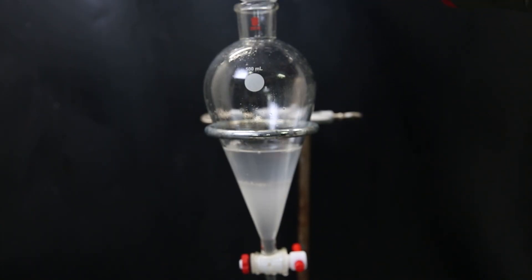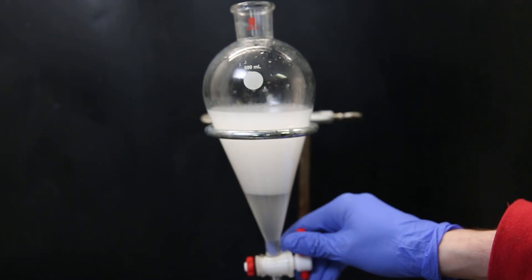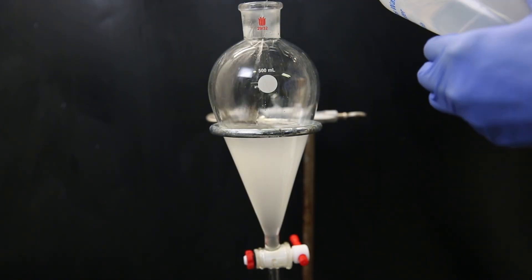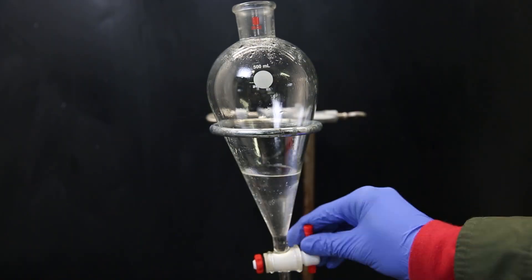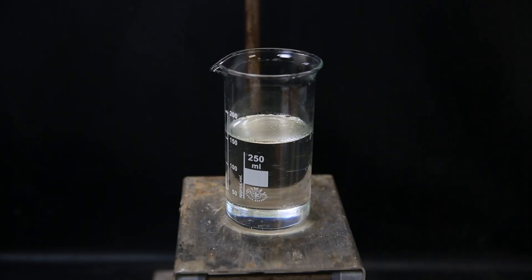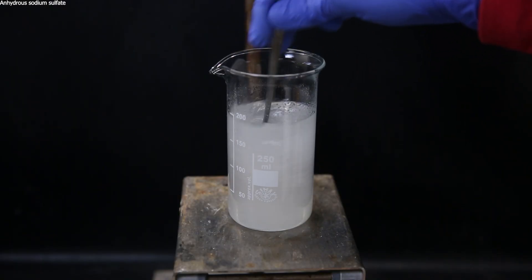On top of that I add the rest of the filtrate and again add some water to knock out any remaining product. I then return the product to the separatory funnel and wash it once with water and then once with brine, which we see takes out a lot of the cloudiness. Now I have collected all of the product in a beaker and add some anhydrous sodium sulfate to absorb remaining droplets of water.